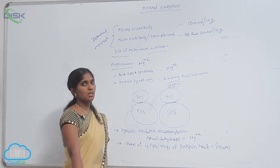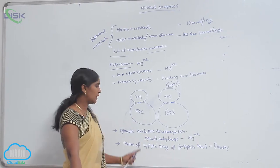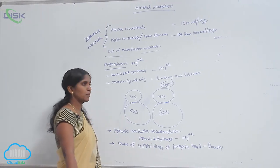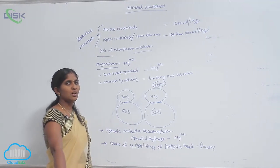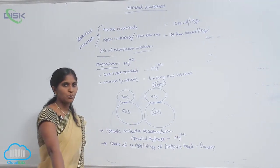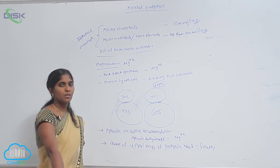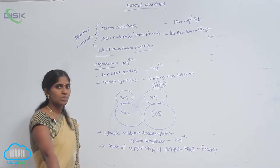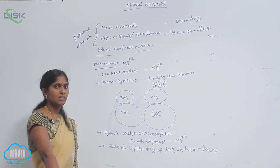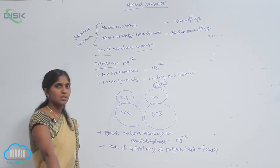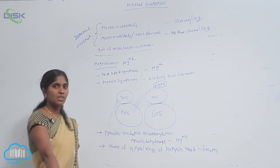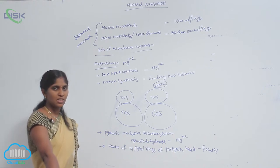The ribosome structure is also maintained with the help of Mg2+ ions. Ribosomes have subunits of 30S and 50S in prokaryotes, whereas in eukaryotes the smaller subunit is 40S and the larger one is 60S.